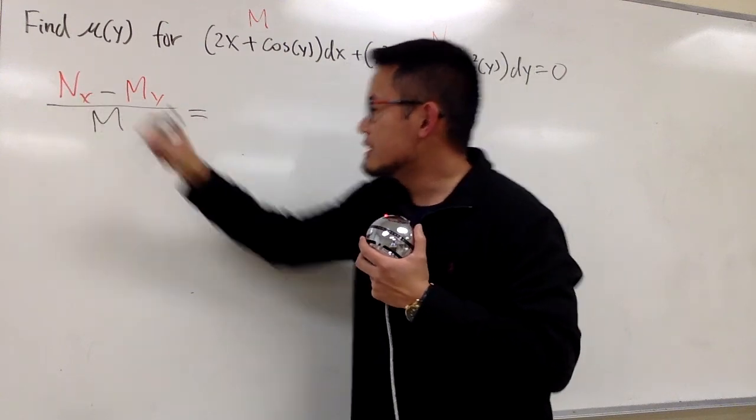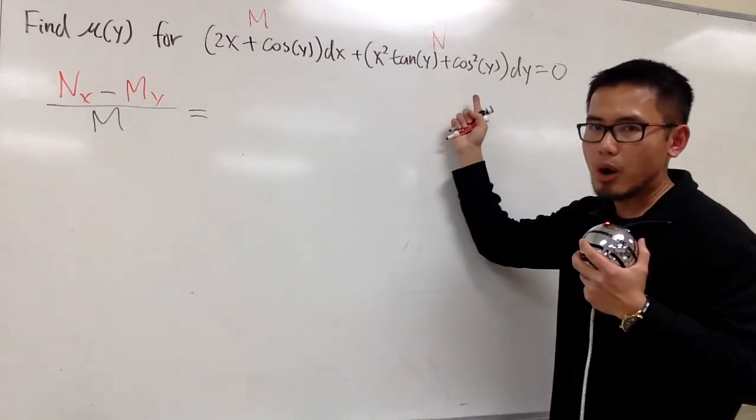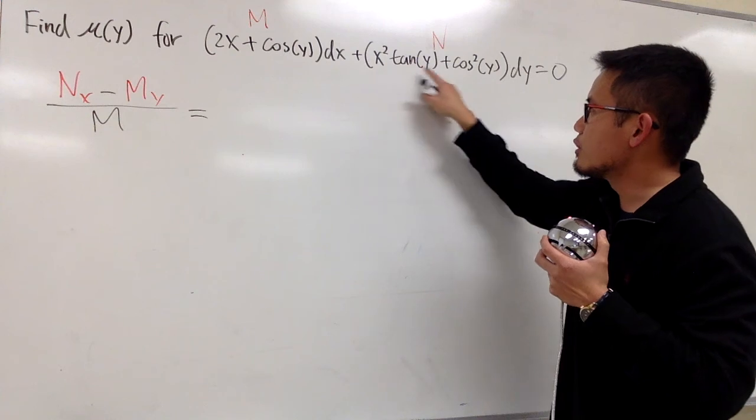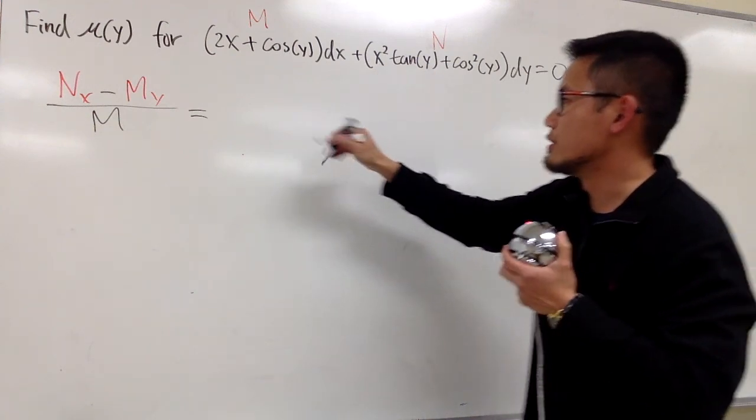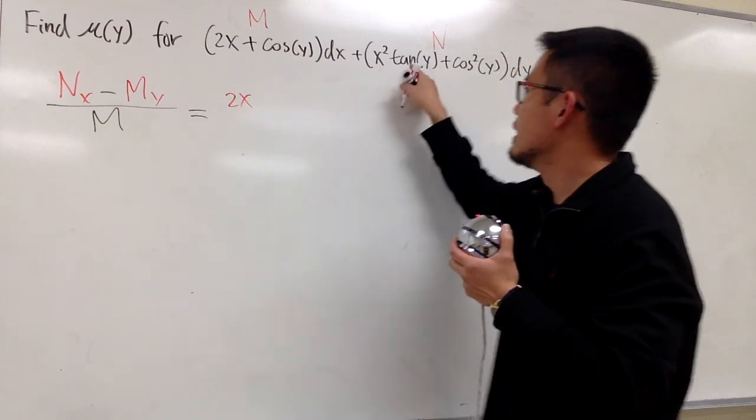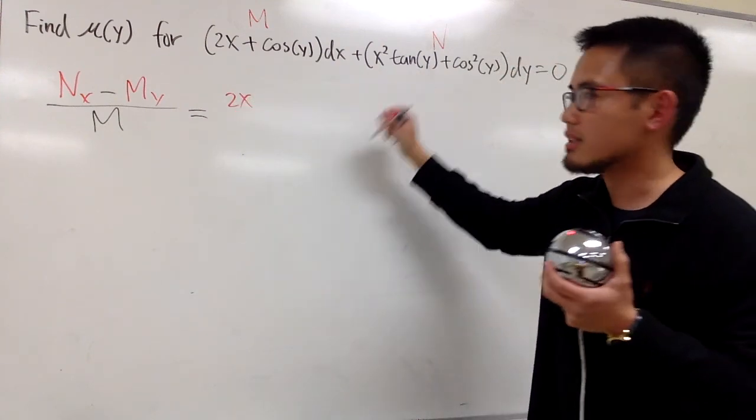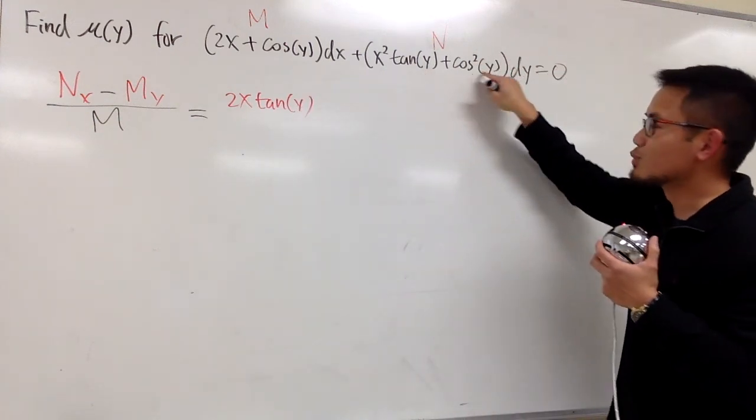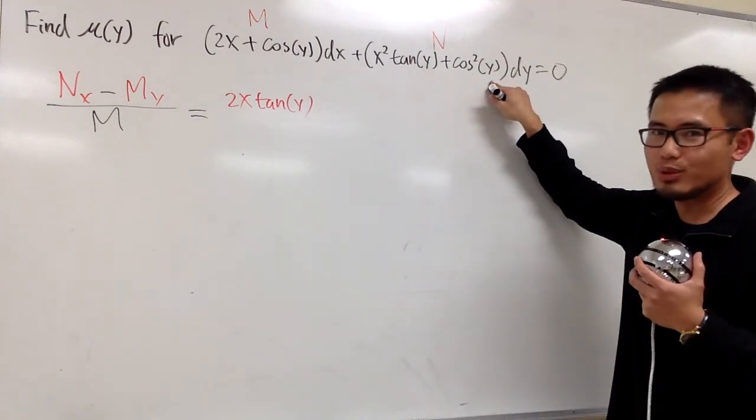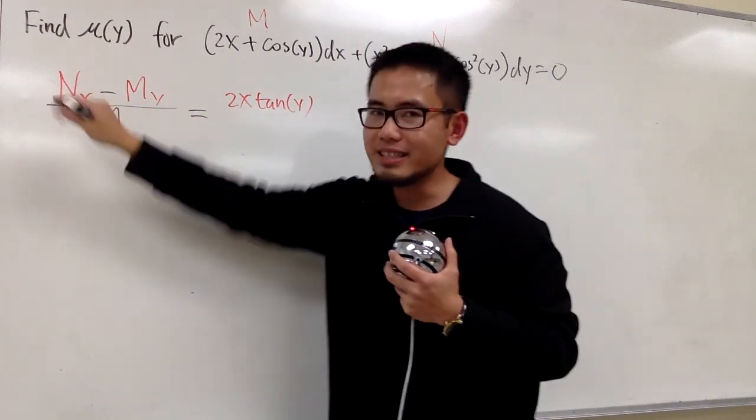So N sub x, we look at this and do the partial with respect to x. This is the only part that we have to worry, right? We go ahead and differentiate x squared, which is just going to be 2x, and then the tangent y is just a constant, so let's go ahead and put that down as tangent of y. And the derivative of cosine squared y in the x world is just zero, so this right here is it.